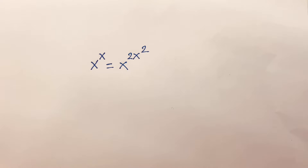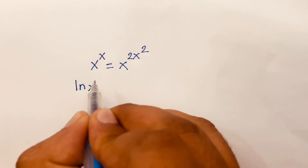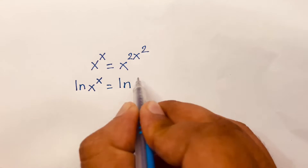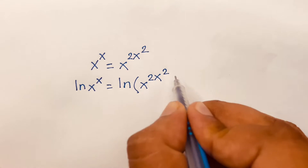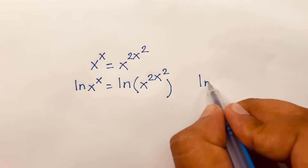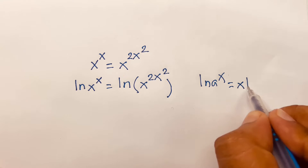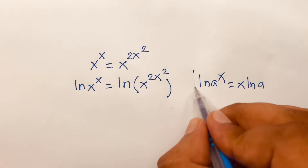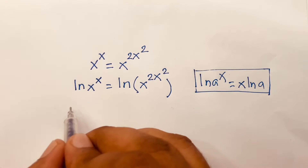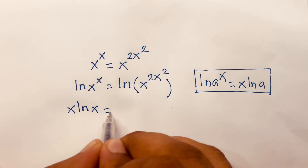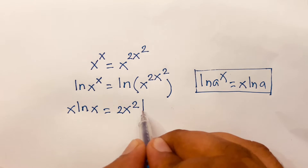First of all, I apply ln to both sides. So it will be ln of x to the power x is equal to ln of x to the power 2x squared. We know that ln(a) to the power x is equal to x·ln(a) — just move the exponent to the front. So according to this rule, x·ln(x) is equal to 2x²·ln(x).